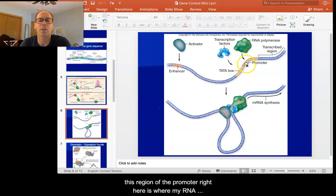This region is where we're going to have proteins called transcription factors attached to the promoter. This region of the promoter right here is where my RNA polymerase will bind. So I actually need both these proteins, these transcription factors, and the RNA polymerase in order to then do transcription of this gene right here.